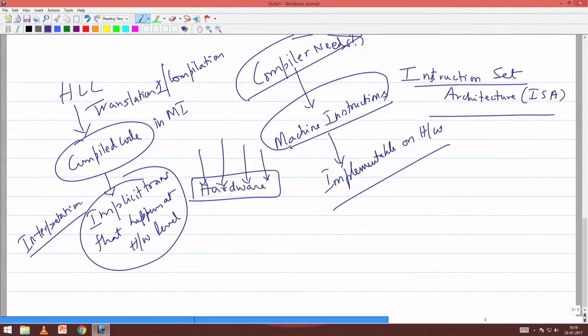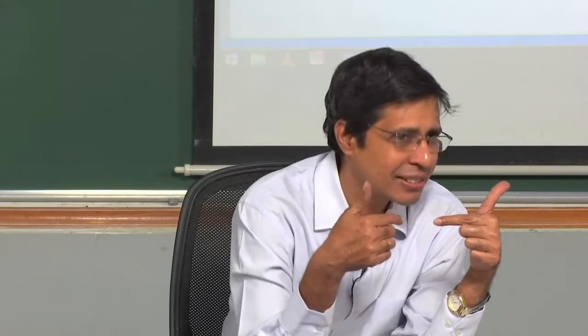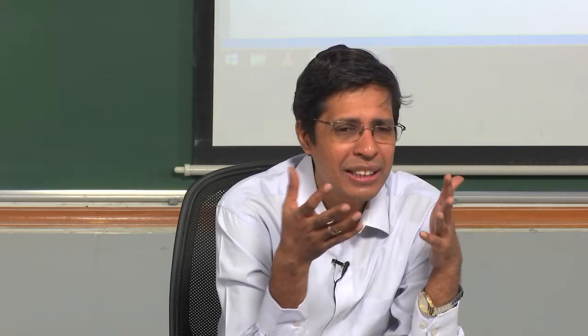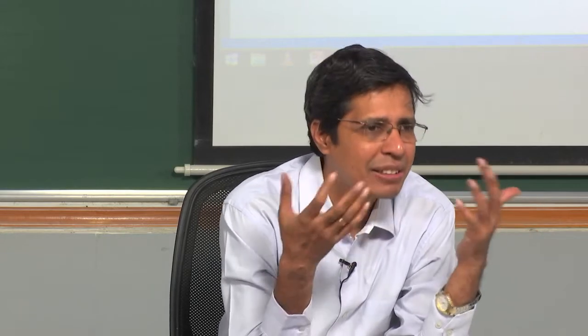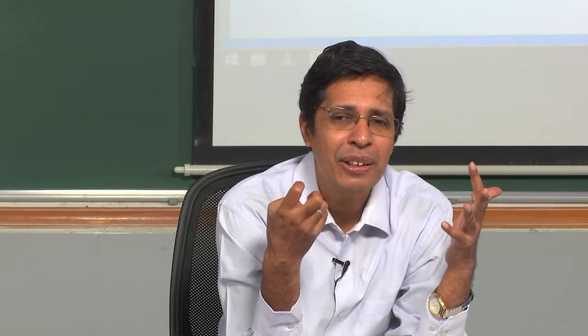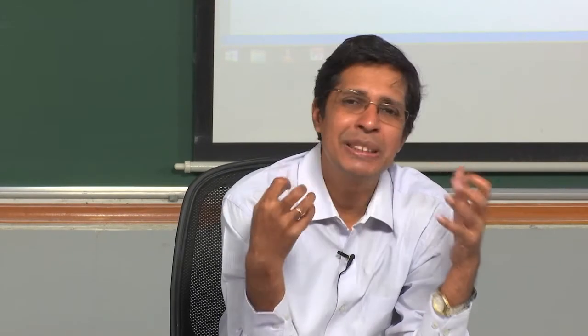The difference between a compiled program and an interpreted program: the first level of translation takes the higher-level language program and converts it into machine language — that is compilation. Now this machine language program is input to the system hardware, which takes instruction by instruction, understands it, and executes it. Somehow we should know that this is add, this is multiply. There are some semantics associated with the instruction which are understood by the hardware, and that is basically interpretation.